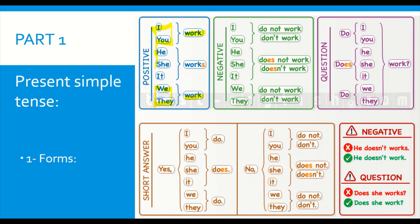With he, she, it — the third person — we have a small change at the end. Usually with regular verbs we add S, ES, or IES. These are things we are going to see shortly afterwards, and we will also see a couple of irregular verbs in the present simple. So with I, you, we, they we use the verb in the base form — for example, I work, you work, they work. With the third person we say he works — we just add an S at the end.